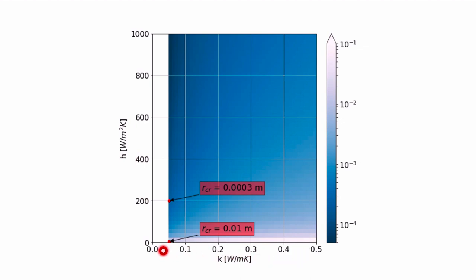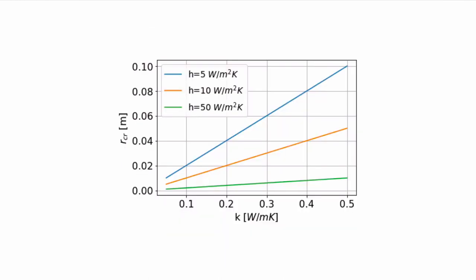So if we have a good insulation with a low thermal conductivity and any kind of significant convection, the critical radius is going to be extremely small. Plotting three low convection coefficient values of 5, 10, and 50 against thermal conductivity, the critical radius values are fairly small — the 2 centimeter line is visible here for virtually any good insulation with a reasonable convection coefficient, confirming that for most practical pipes, adding insulation makes sense.